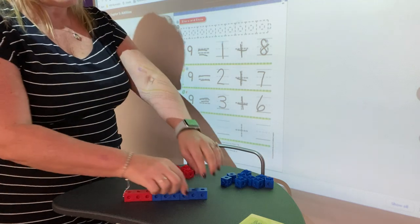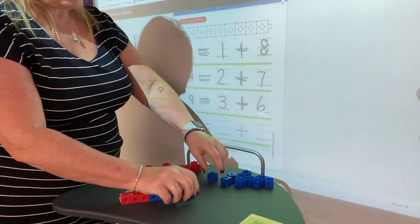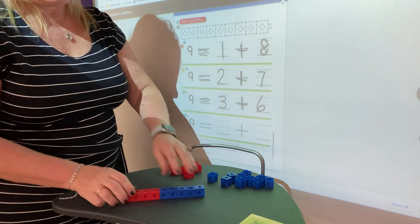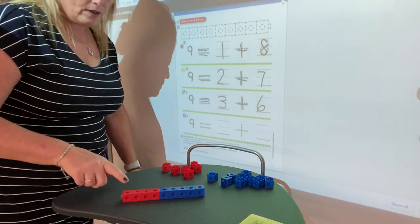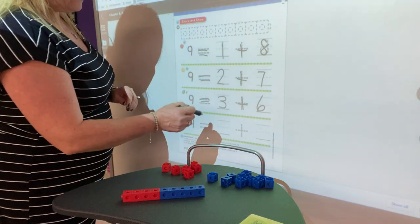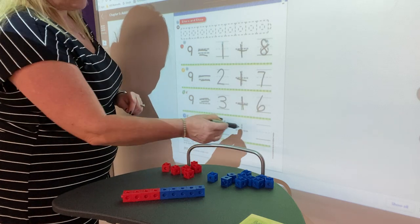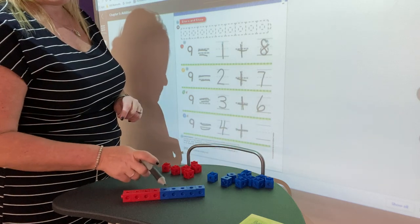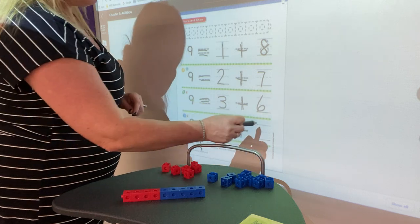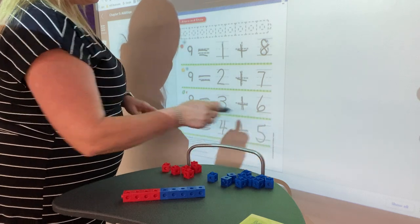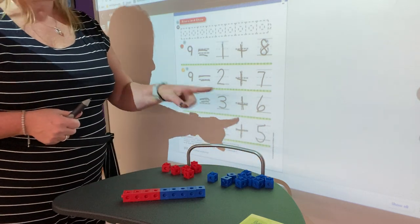If I take away my blue and I add a red, my new number sentence will be 4. 9 is equal to 4 plus how many blues? 1, 2, 3, 4, 5 plus 5 blues. So 9 is equal to 4 plus 5.